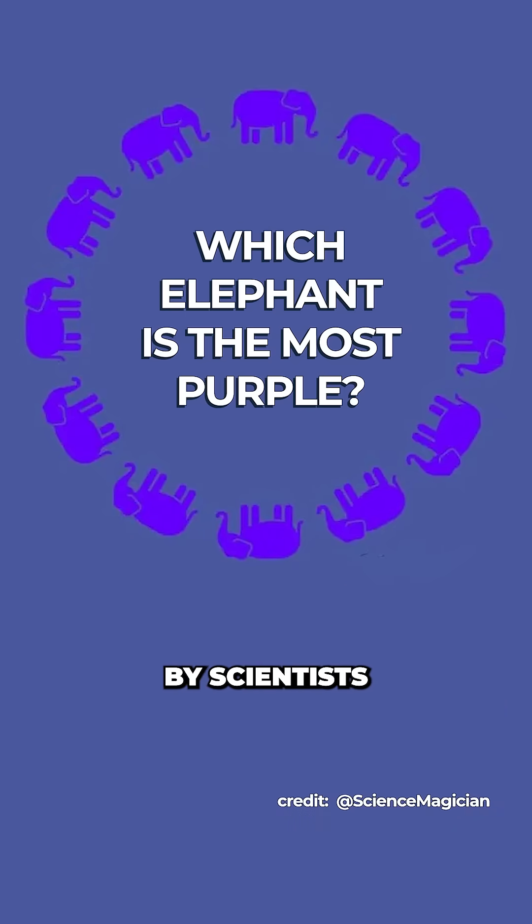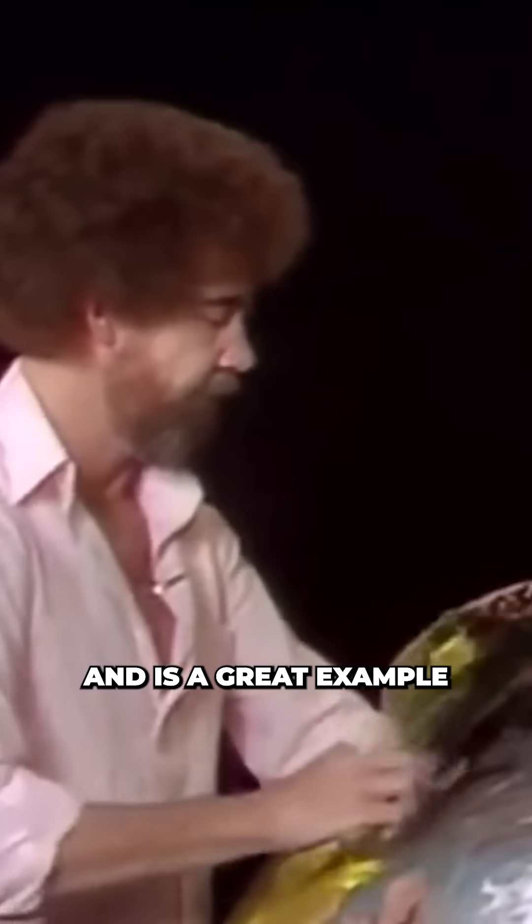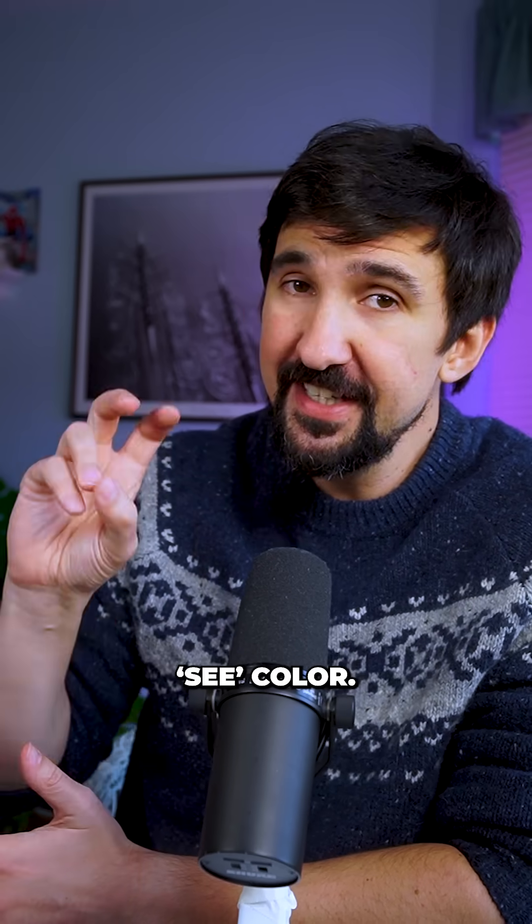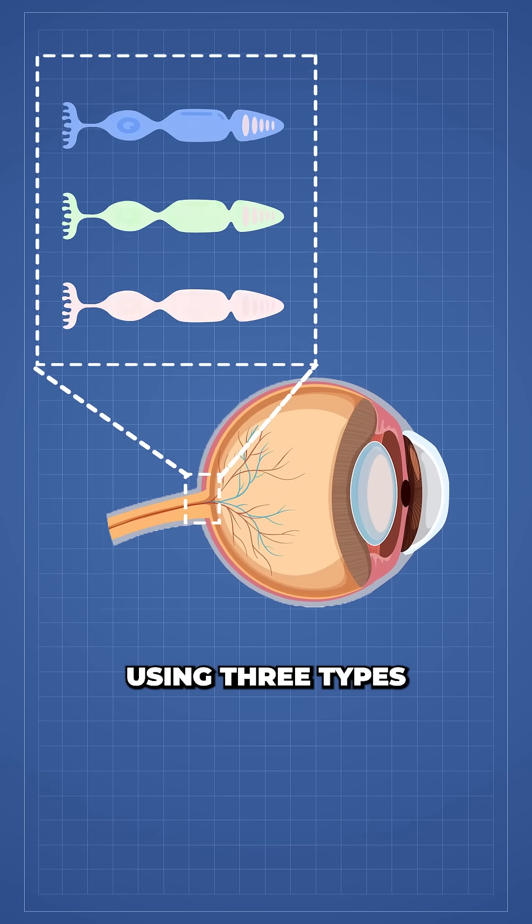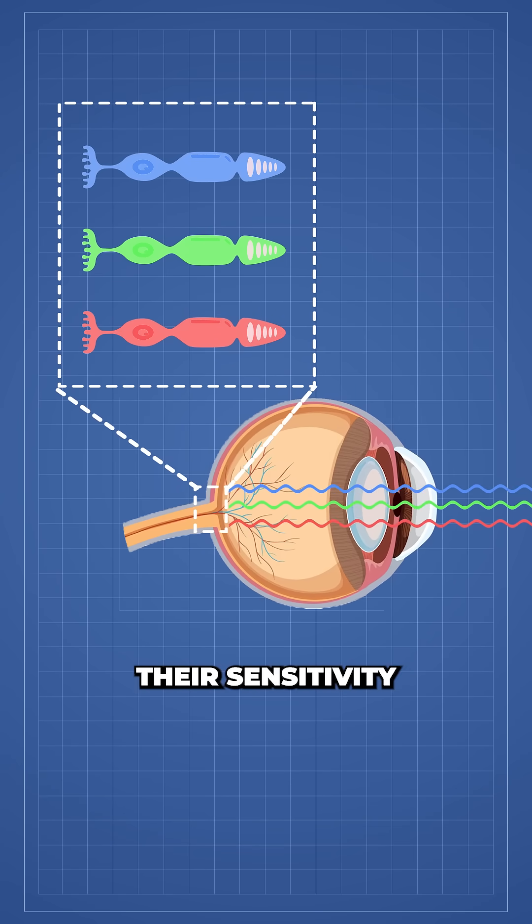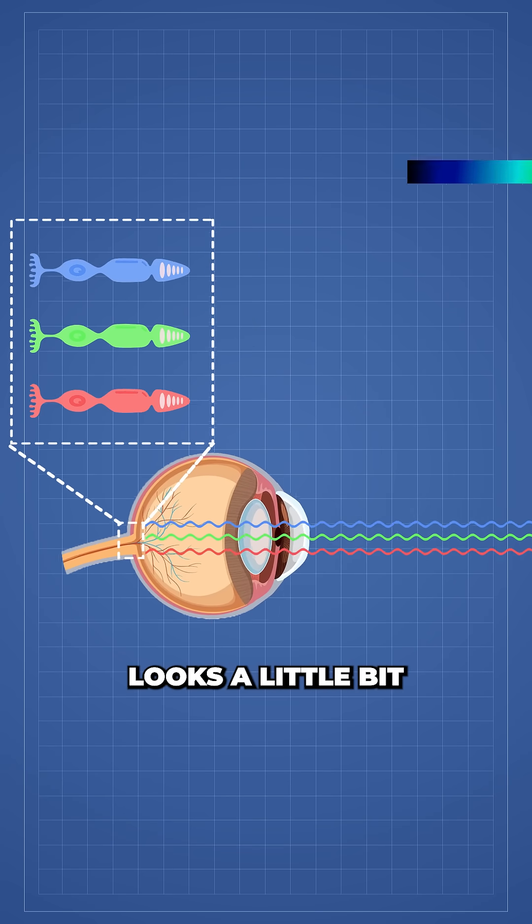This optical illusion was created by scientists at Harvard Medical School and is a great example of how our brains see color. Your eyes detect color using three types of cone cells. Their sensitivity to different colors of light looks a little bit like this.